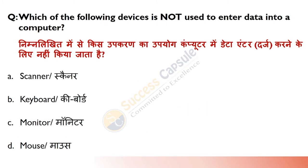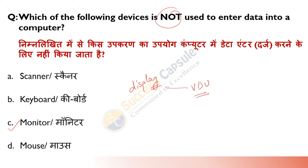Which of the following devices is not used to enter data into a computer? Answer is C — Monitor. Monitor pe hum display dekhte hain, jo uski screen hoti hai. Ise video display unit bhi kehte hain.